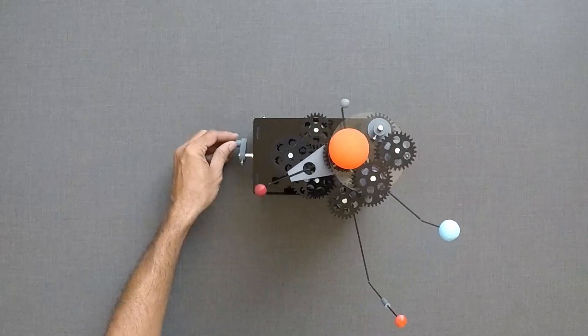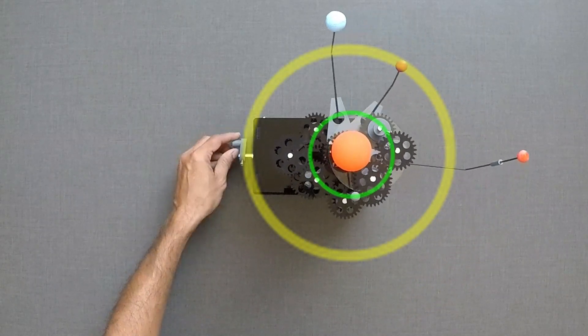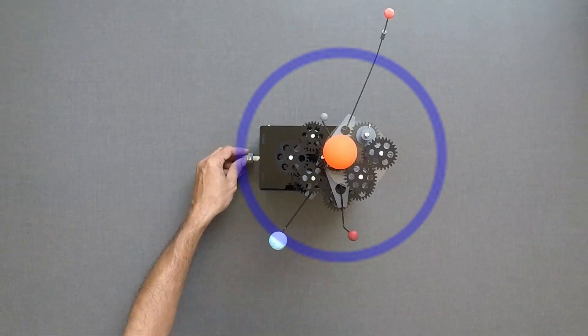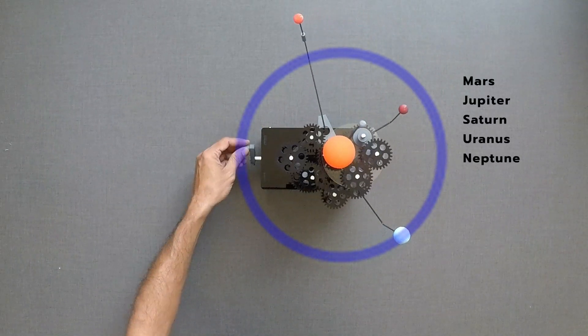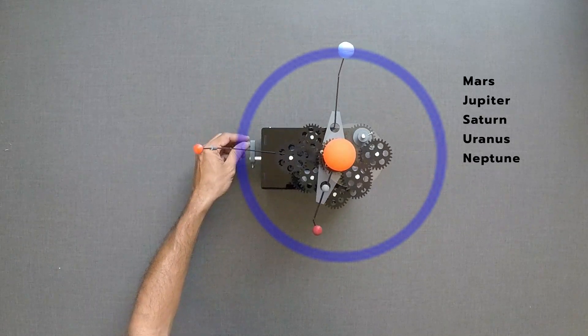The planets which orbit inside the Earth's orbit cannot be in opposition. But the planets orbiting outside the Earth's orbit, which are Mars, Jupiter, Saturn, Uranus, and Neptune, all can be in opposition.